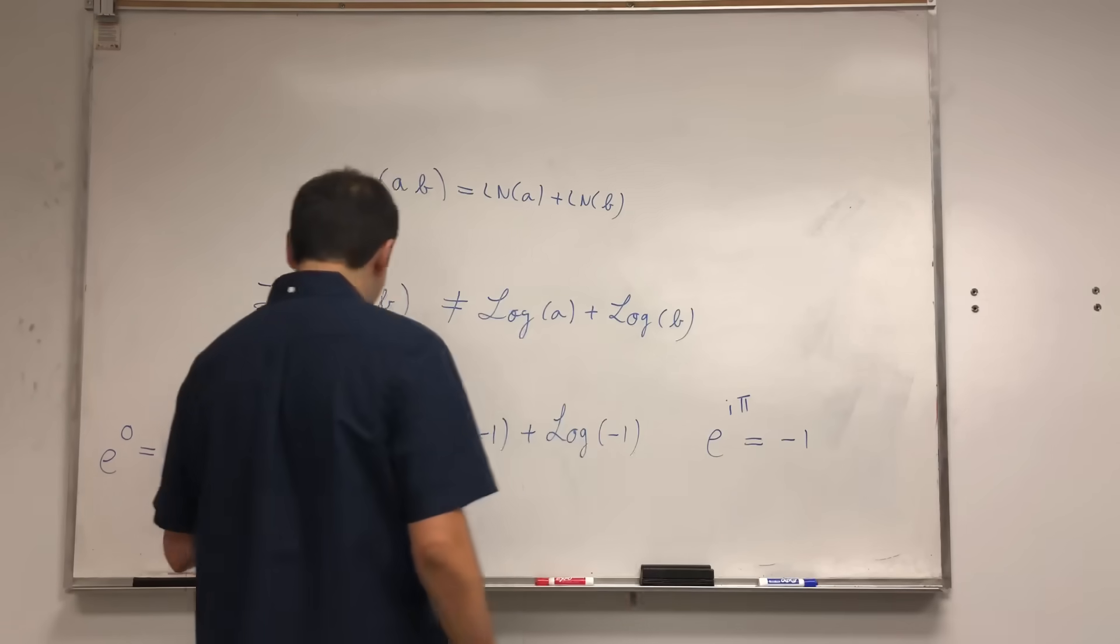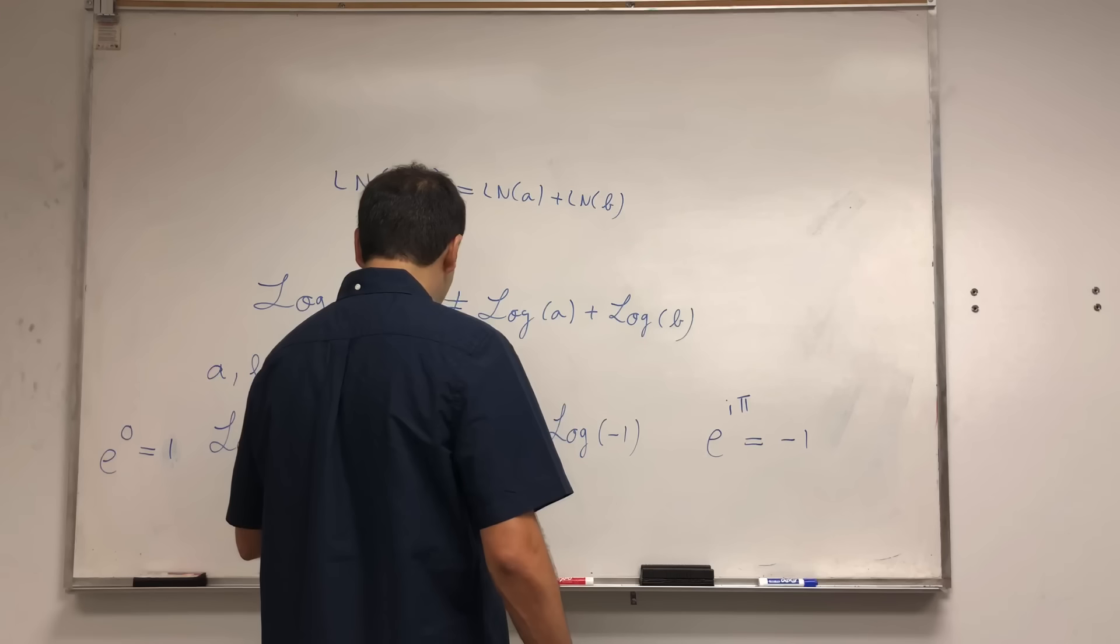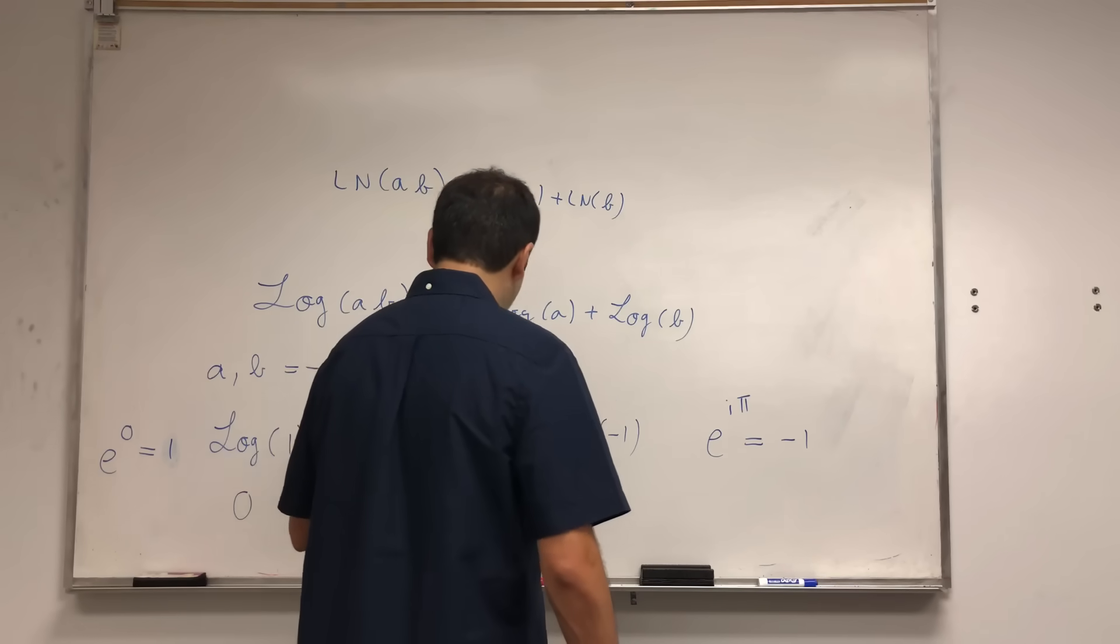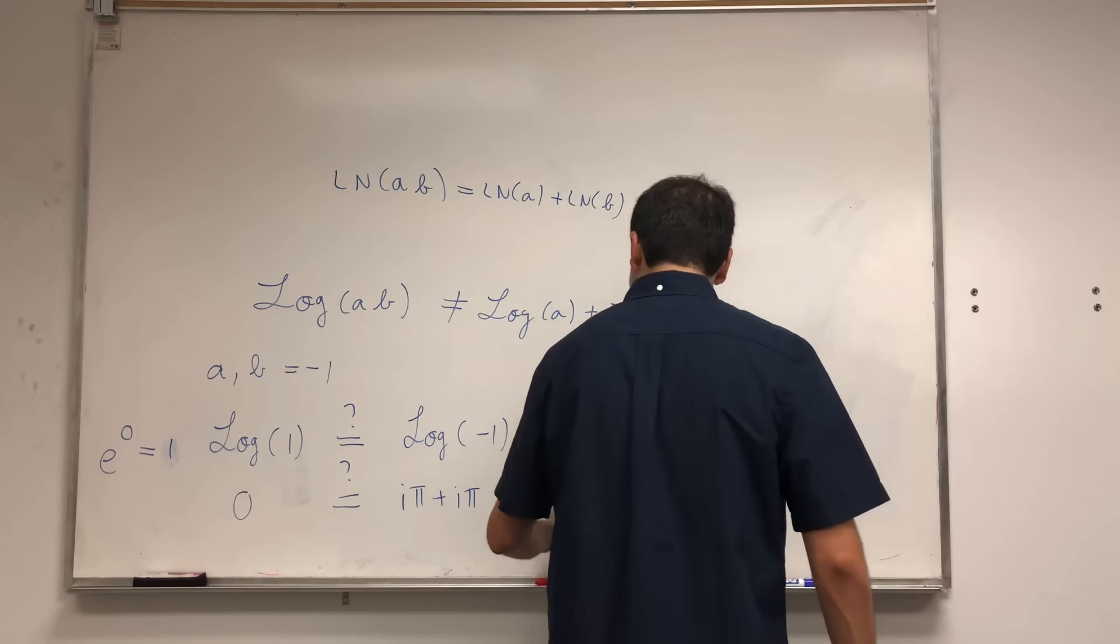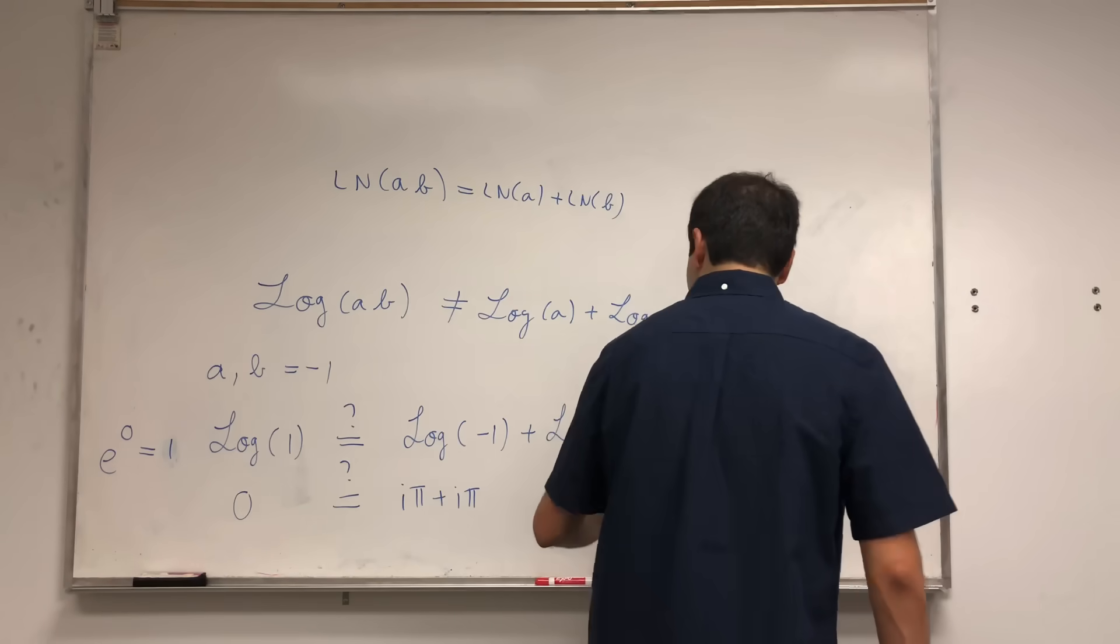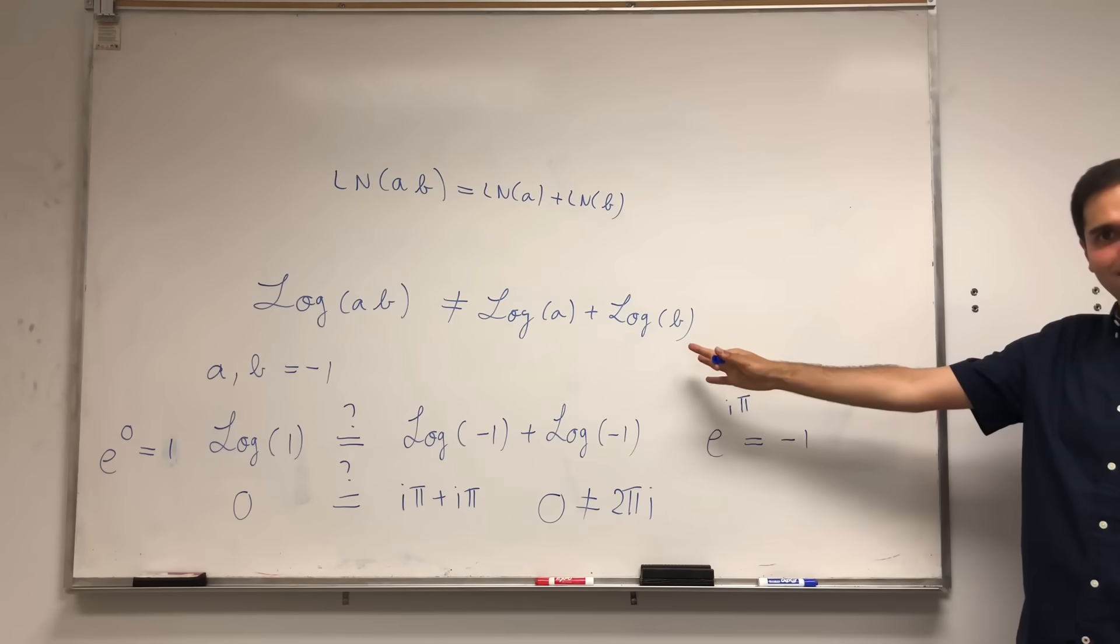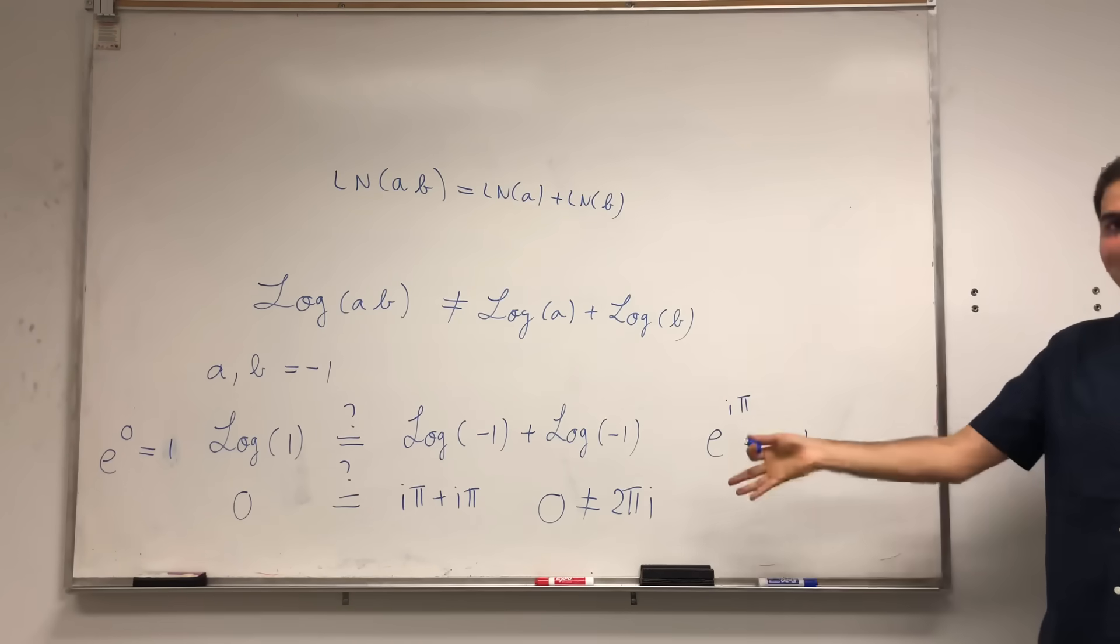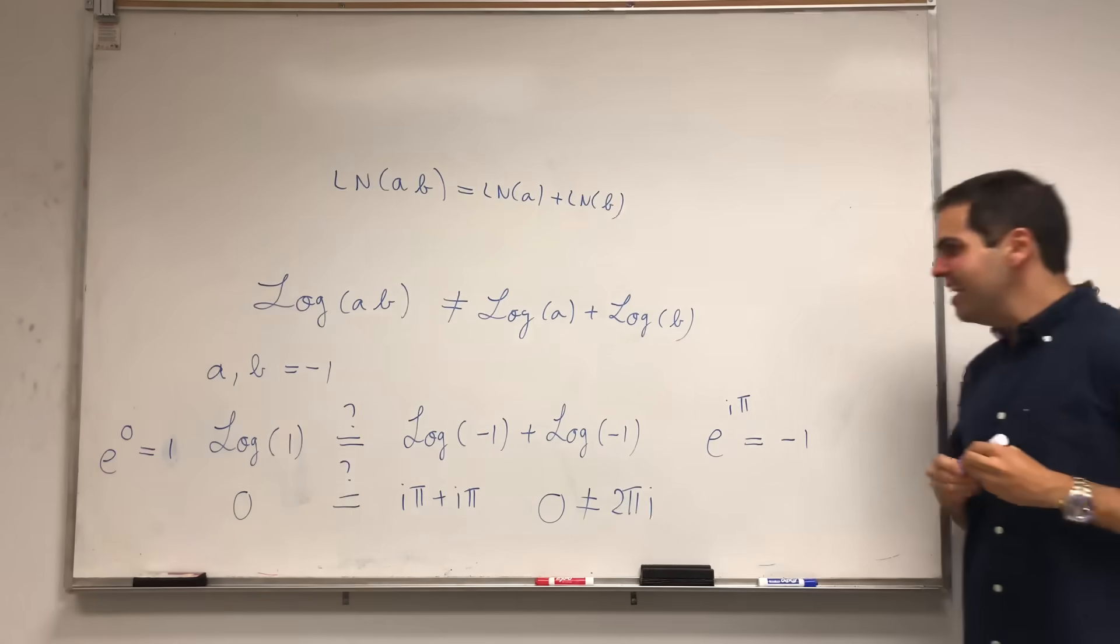So the question is, is 0 equal to iπ + iπ? And no, because 0 is not equal to 2πi. So for principal log, this is not true anymore. That said, for regular log, the general one, it is true.